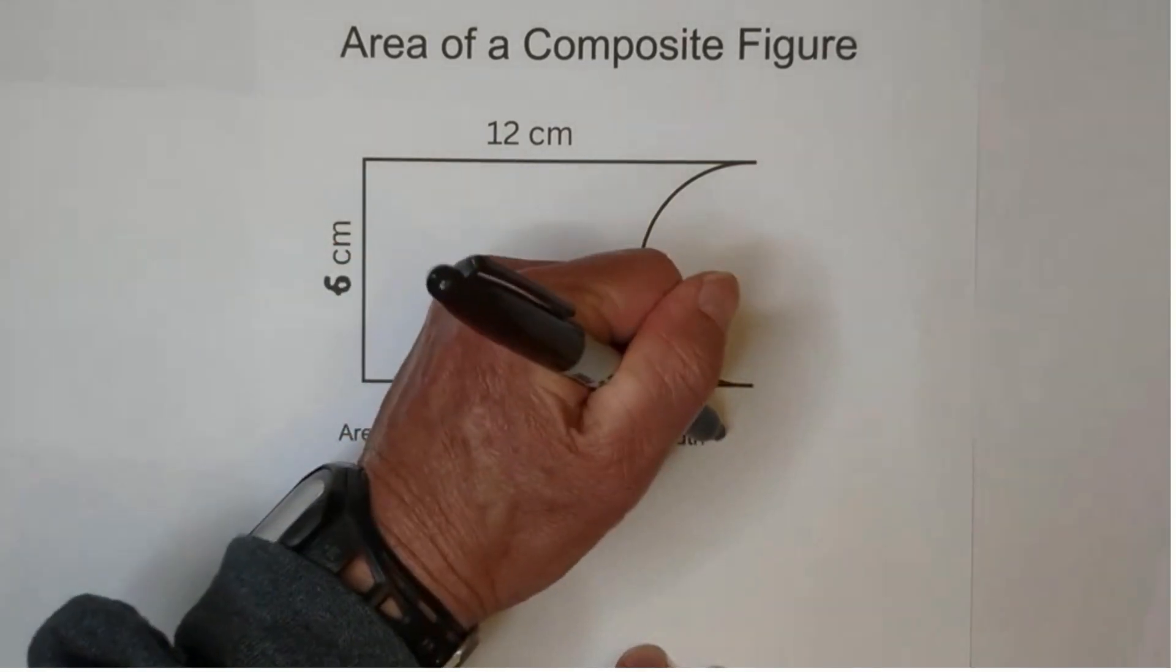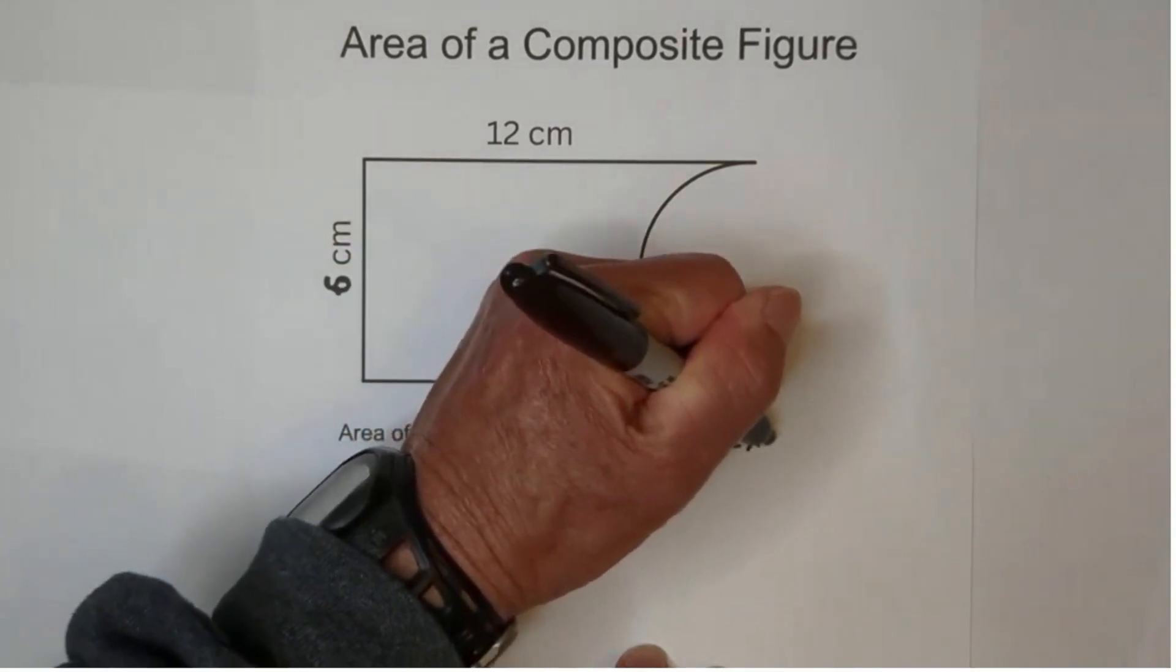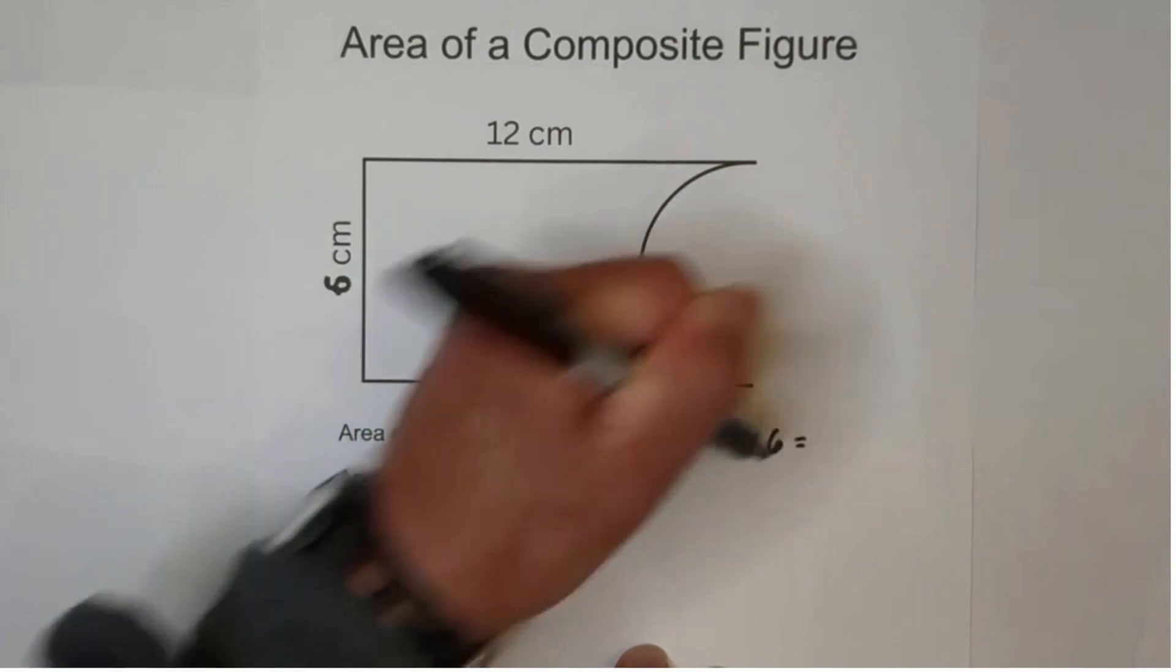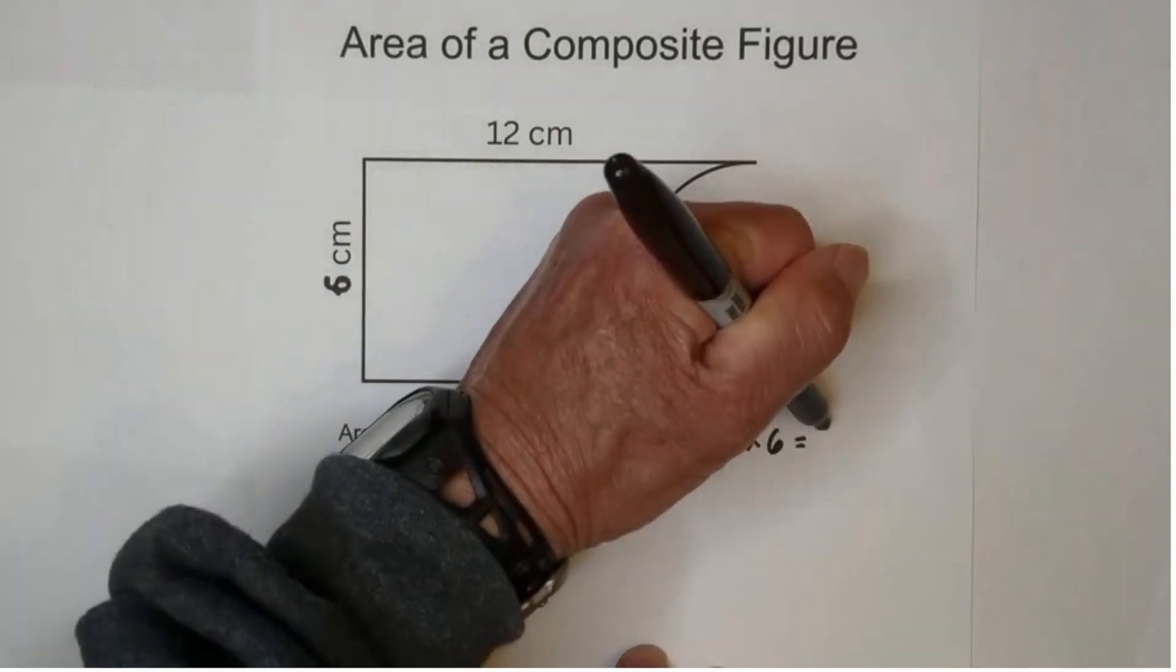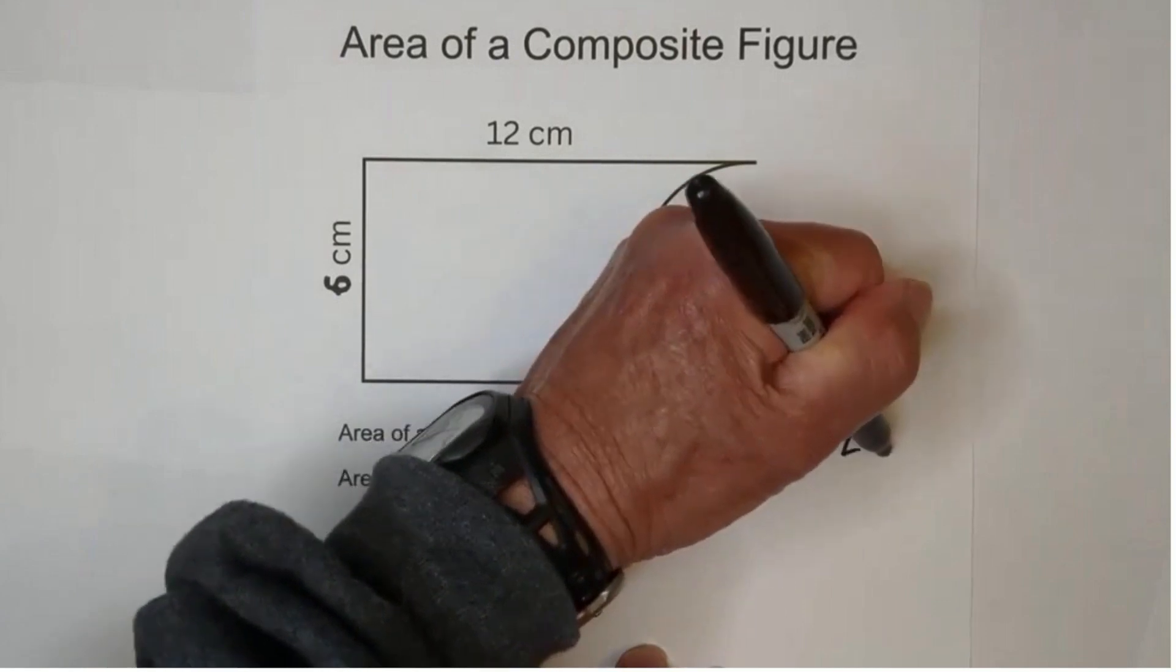So it's pretty much given. We have 12 times 6, and remember it's in centimeters, and that equals 72 centimeters.